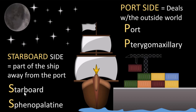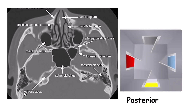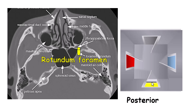Going towards the posterior door — the posterior door has two parts. The more superior part is the foramen rotundum. It looks like a cylinder going straight back. I remember foramen rotundum is the posterior door because both rotundum and 'rear' start with R, so the superior part is the foramen rotundum.